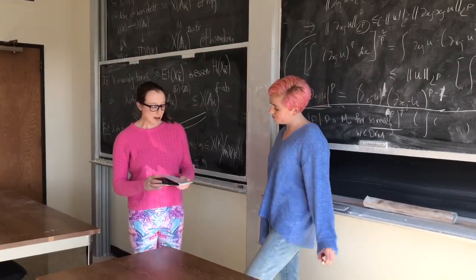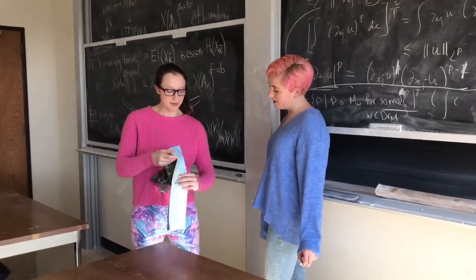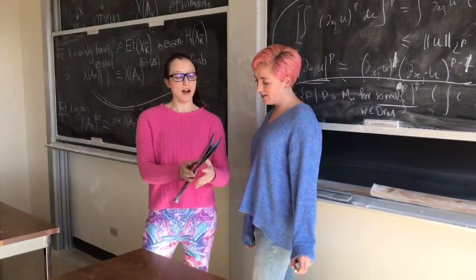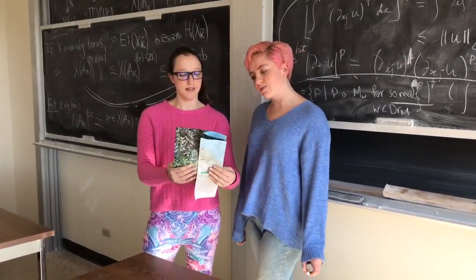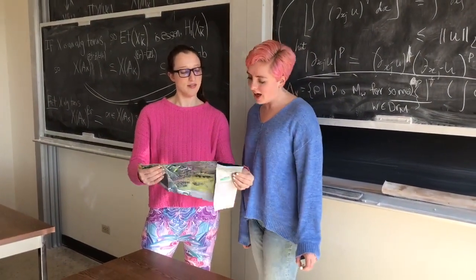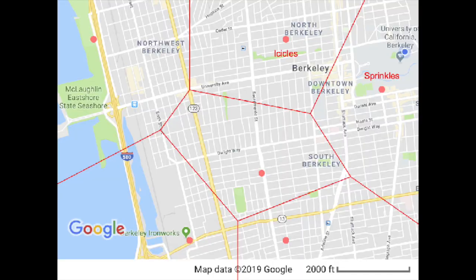Actually, I keep an ice cream zone map of Berkeley in my back pocket. An ice cream zone map? What's that? This map splits Berkeley into zones depending on which ice cream shop is nearest. According to my calculations, if we are standing right here in Berkeley, we should go to Sprinkles.